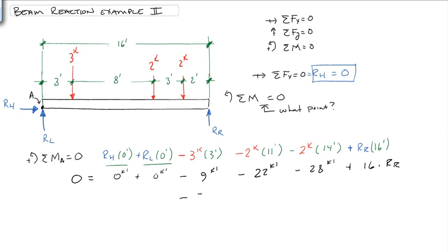So we get minus 59 kip feet, plus 16 times RR is equal to 0. Or RR is equal to 59 kip feet, divided by 16 feet is equal to 3.69 kips.